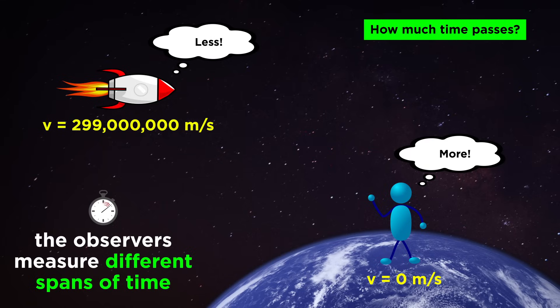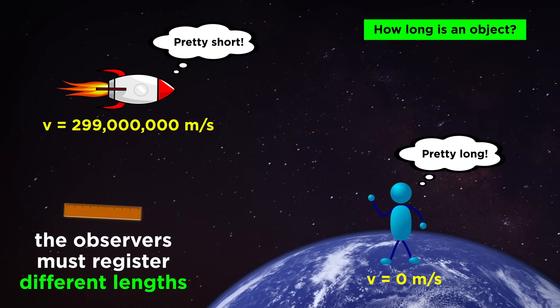This is because if an observer on Earth and an observer in a fast spaceship registered different spans of time for an event, they must also be recording different distances, since both observers agree on the same relative velocity between them.